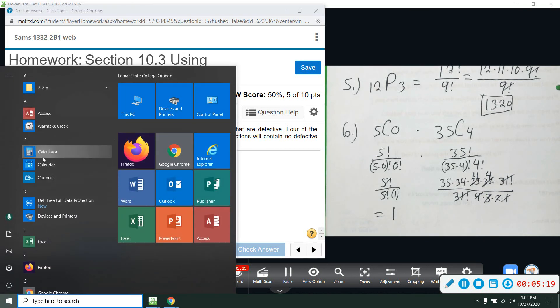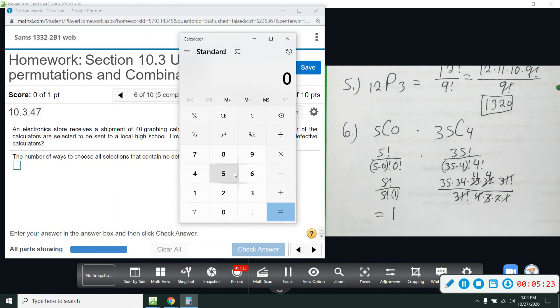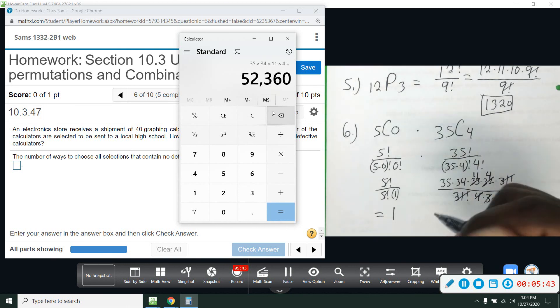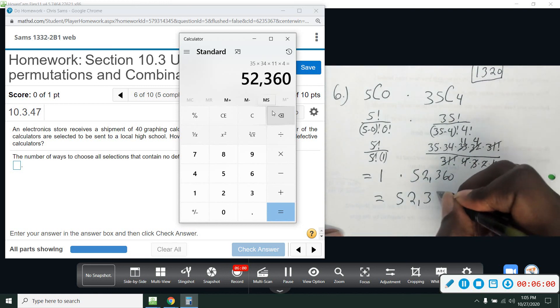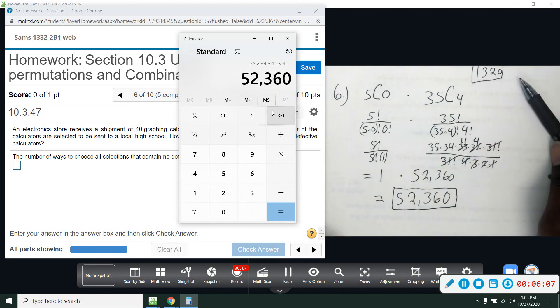So we're going to do 35 times 34 times 11 times four. So up there, 35, 34, 11, and four. Okay, so that gives us 52,360. So we would just multiply that times one, and we would get the same thing. Running out of room. 52,360. So there are that many ways to pick groups of four calculators where none of them are defective.